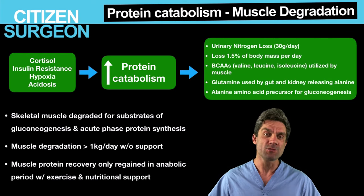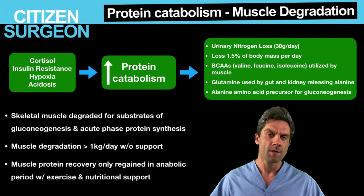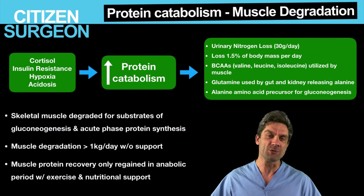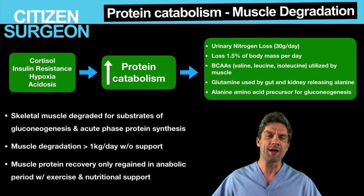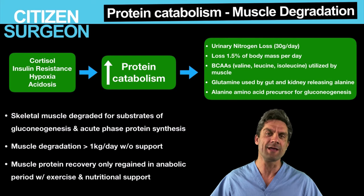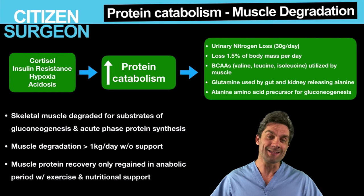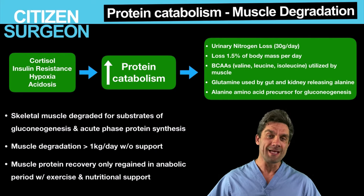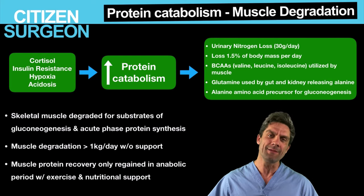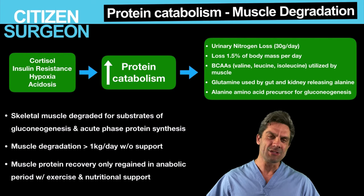We know that surgical stress leads to increased protein breakdown and that proteolysis leads to increased nitrogen excretion in the urine as we build our acute phase proteins in the liver. This response is proportional to the injury. The amount of protein breakdown can be up to 30 grams of nitrogen a day secreted in the urine — that's equivalent to about 1.5% loss of lean body mass a day, or up to a kilo of skeletal muscle broken down every day. Without nutritional support, which can suppress but not completely eliminate protein breakdown, skeletal muscle loss can be rapid.